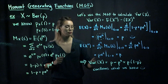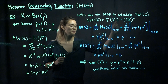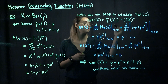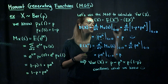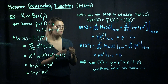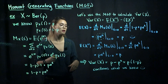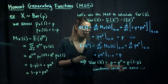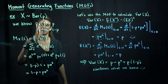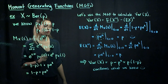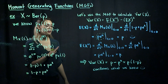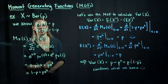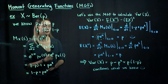Plugging into our variance expression, since the second moment is p and the first moment is p, we get p minus p squared, which we can rewrite as p times 1 minus p. This is the variance of a Bernoulli random variable. We haven't found anything new — we're just confirming what we already knew, but it's good practice for understanding how to use moment generating functions.